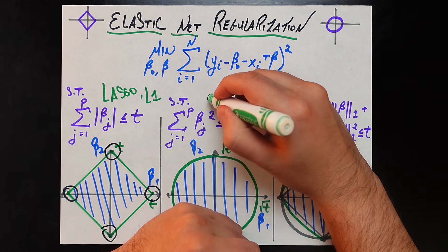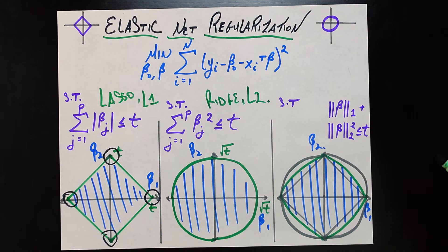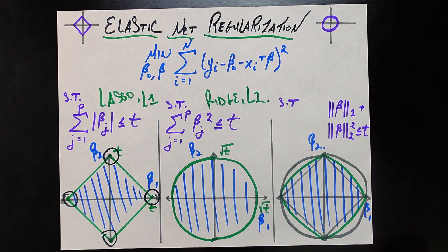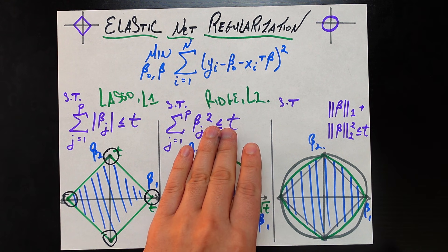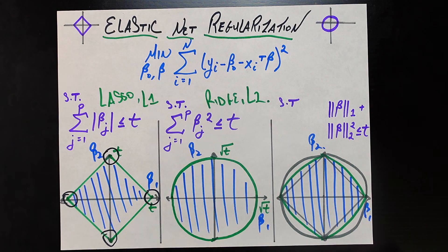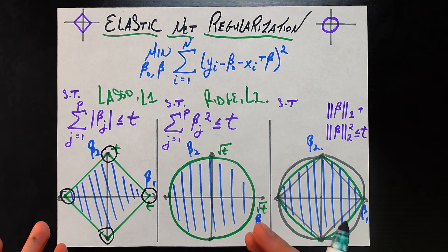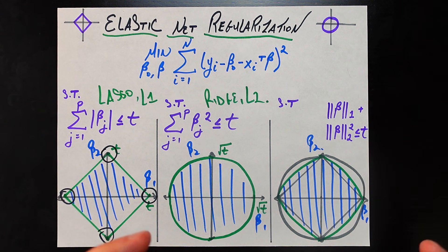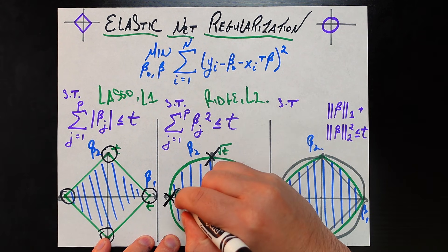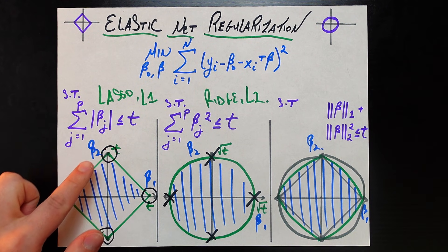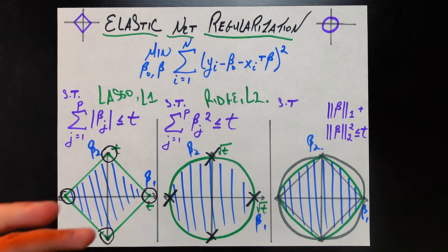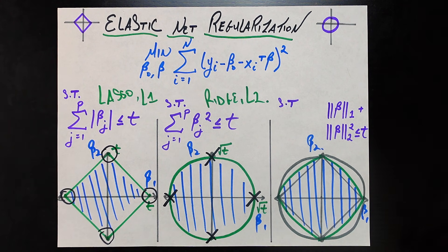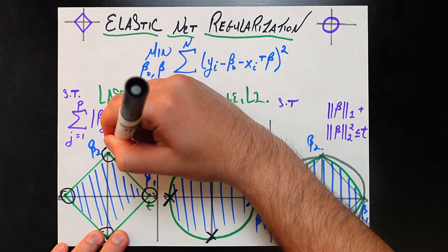That brings us to ridge regression, or L2 regularization. In ridge we have the same minimization problem, except the constraint is that the sum from j equals 1 to p of beta-j squared must be less than or equal to t. Even though that looks like a small change mathematically, it has very different implications. Geometrically, we are no longer dealing with a diamond but with a circle of radius square-root of t, and that shape difference is not just cosmetic.